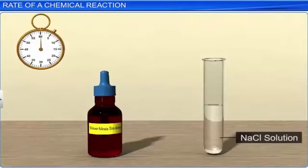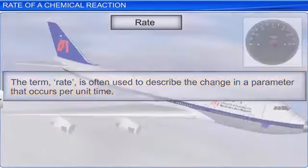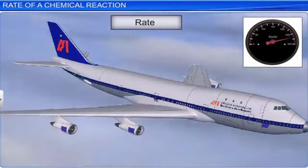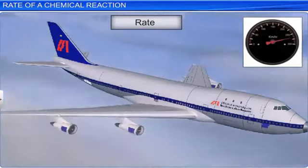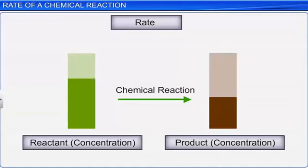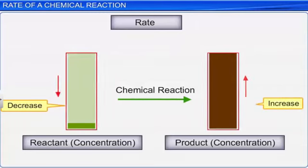Let us start with a simple definition of the rate of a chemical reaction. The term rate is often used to describe the change in a parameter that occurs per unit time. For example, the rate at which an aeroplane travels is the distance travelled per unit of time, such as kilometres per hour. In chemical kinetics, the rate of a chemical reaction is defined as the rate of decrease in the concentration of the reactant, or the rate of increase in the concentration of the product.